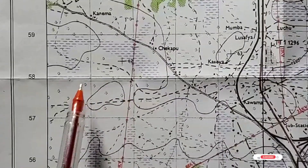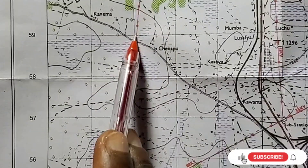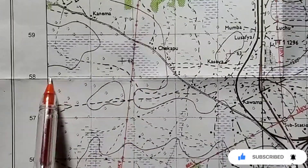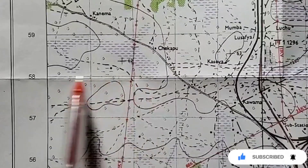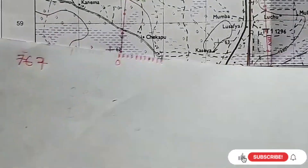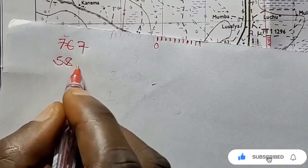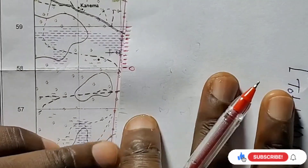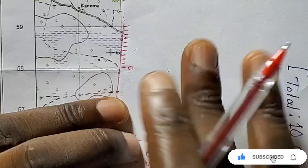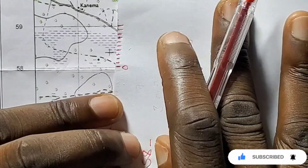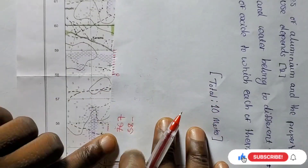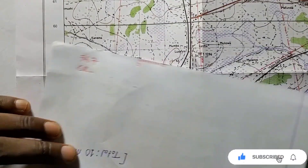Now we look at the area where our location is and consider the line that is down here — this is 58. So we write 58. Then for the remaining figure, we use what we've measured and place it on this side. The zero is here and we count: one, two, three — just four. So the sixth digit is four.